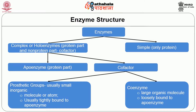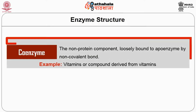The cofactors required to make an apoenzyme into a holoenzyme can be either inorganic or organic. We have two types of cofactors: coenzymes and prosthetic groups. Coenzymes are large organic molecules loosely bound to the apoenzyme, whereas prosthetic groups are usually small inorganic molecules or atoms tightly bound to the apoenzyme. The non-protein component that is loosely bound to the apoenzyme is generally attached by a non-covalent bond.